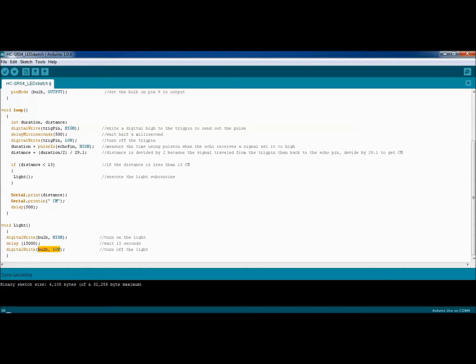I took the serial monitor and set it to always print the distance every half a second. It prints the distance, puts a space and a centimeter after that, so we know that we're measuring the distance in centimeters.